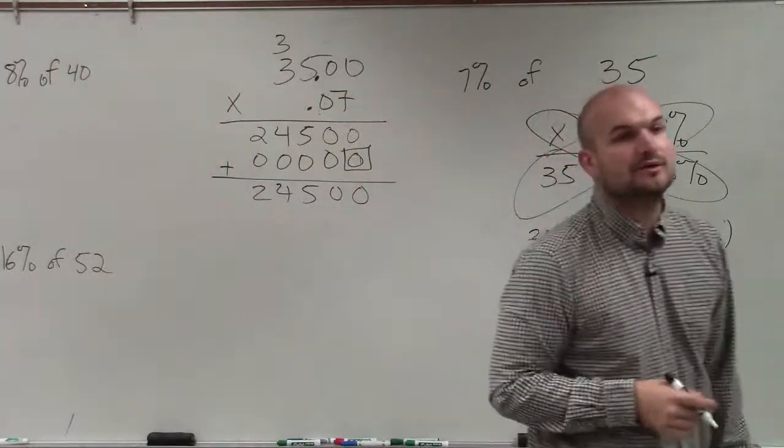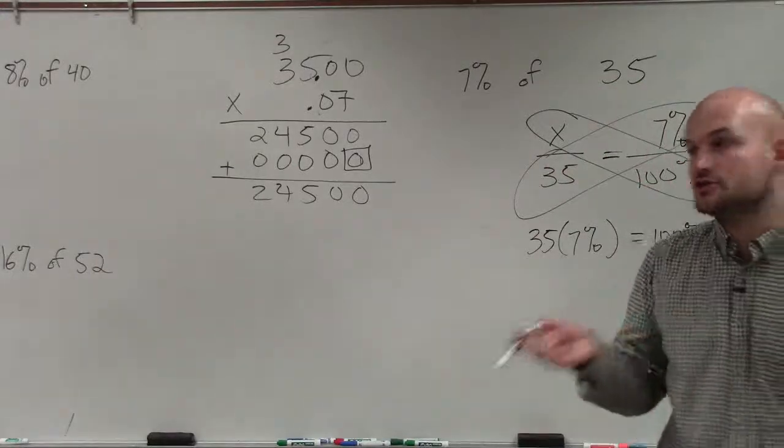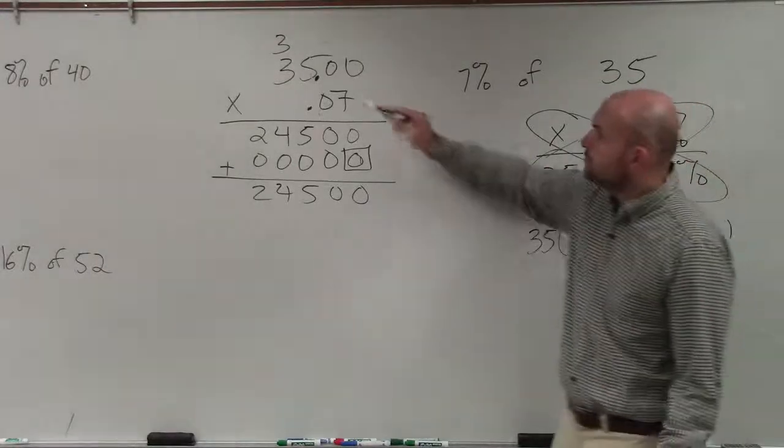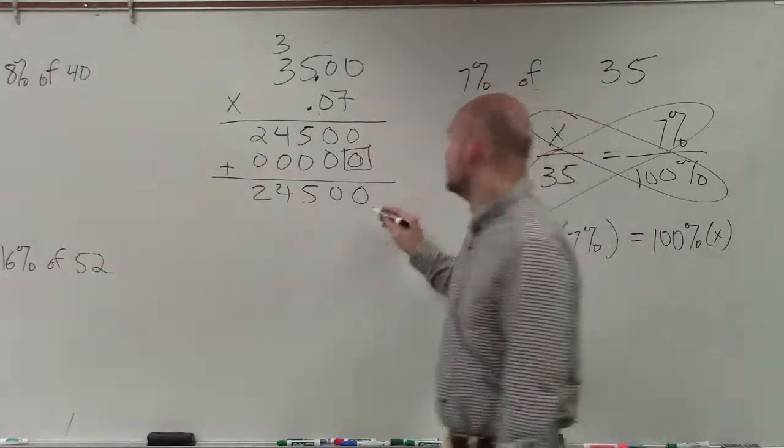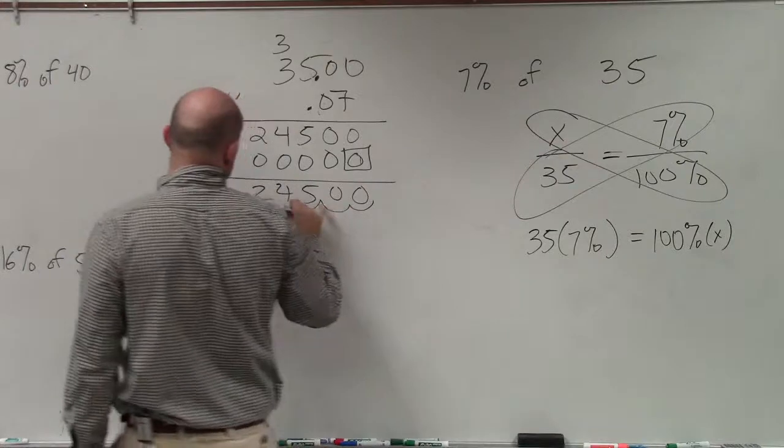And then remember, when you're doing multiplication, Tyler, to determine where the decimal point goes, we basically add the number of place values to the right of my decimal: 1, 2, 3, 4. So I go 1, 2, 3, 4.